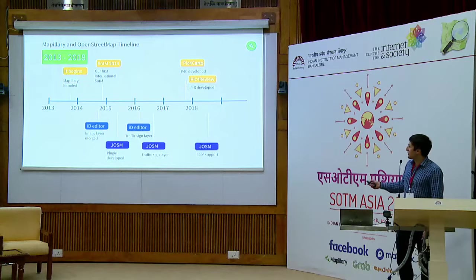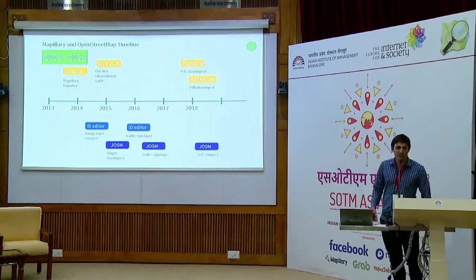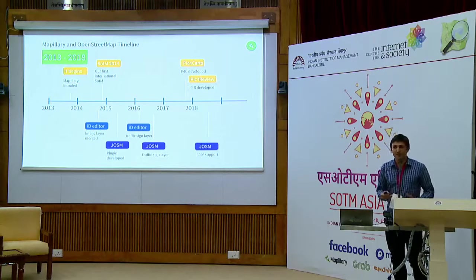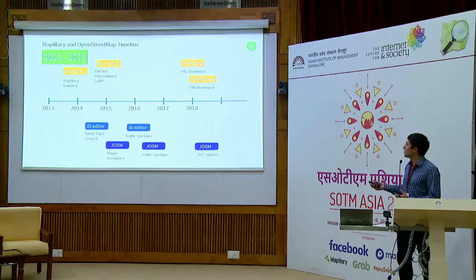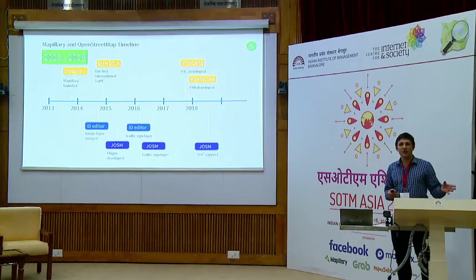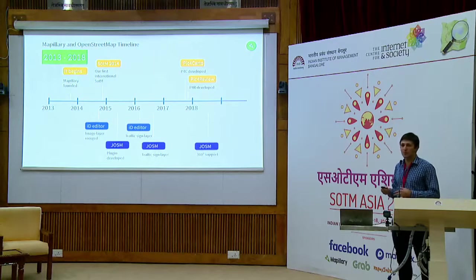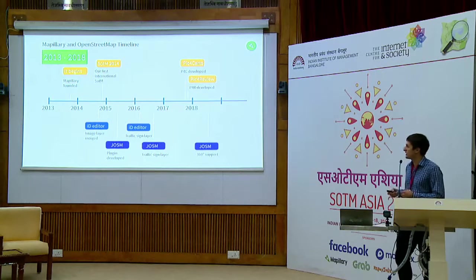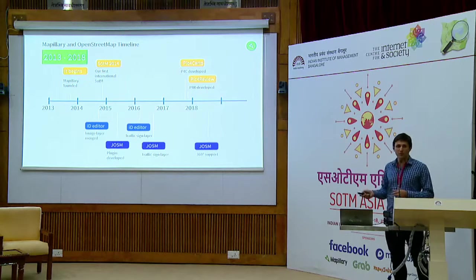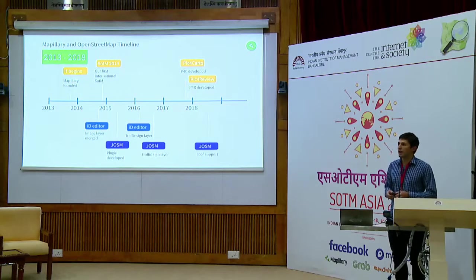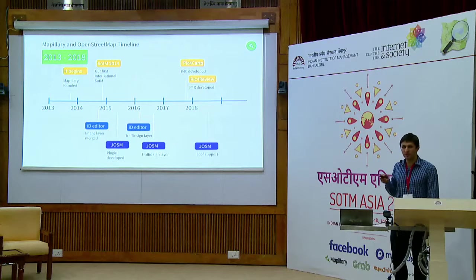Now one of the exciting things is we're seeing the community use our API and tools to create new tools. Things like OSM Char are a great example of tools that help more efficiently edit OpenStreetMap or look at edits that were incorrect. PickForCarto and PickForReview are tools that have emerged to make it easy to use street-level imagery, with street-level imagery as a primary input.